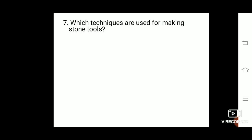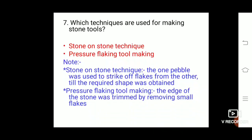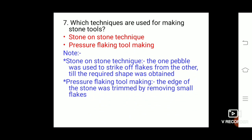Which techniques are used for making stone tools? There are two techniques. The first is the stone-on-stone technique: one pebble is used to strike off flakes from the other until the required shape was obtained. The second is pressure flaking tool-making: the edge of the stone was trimmed by removing small flakes.